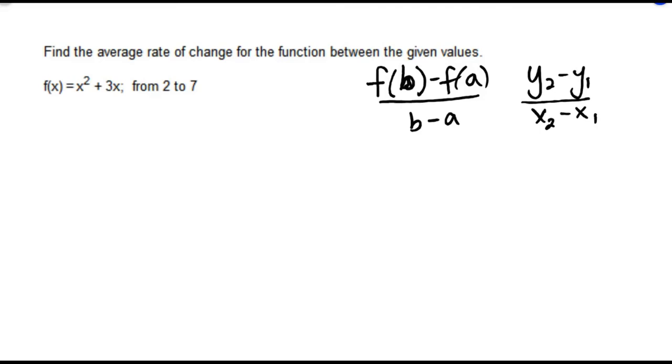If you look at the average rate of change formula, f(b) and f(a) are two y-values and we're subtracting them. And then we have their associated x-values in the denominator that we're subtracting. So this is very similar to the slope formula.